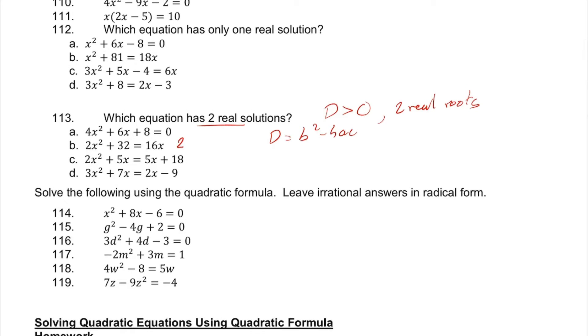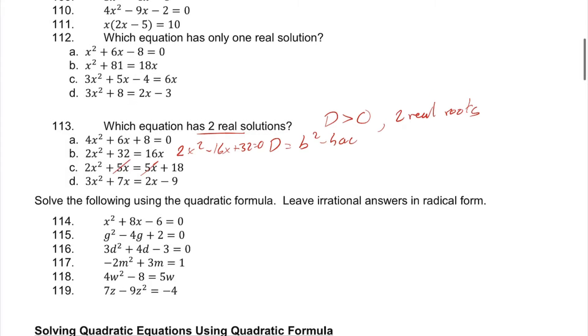The second would be 2x squared minus 16x plus 32 equals zero. For the third, since we have 5x on both sides, we can subtract 5x out, so we'll have 2x squared minus 18 equals zero.